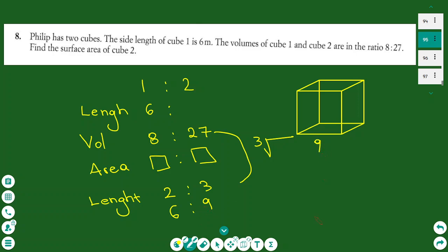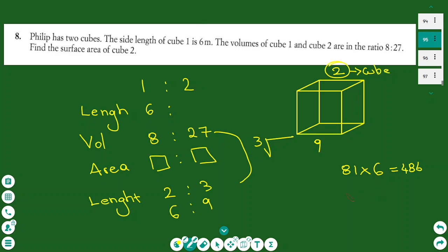Now finding the surface area of cube 2 with length 9: one face is 9 squared, which is 81. A cube has 6 faces, so the surface area is 6 times 81, which equals 486 square metres. This is the surface area of cube 2.